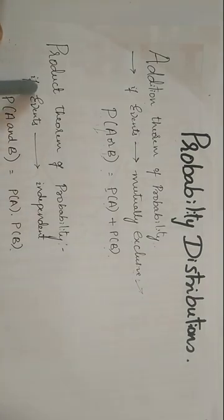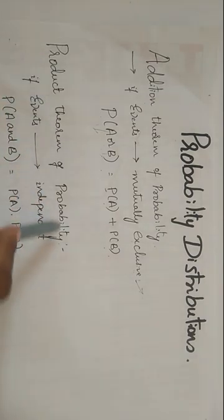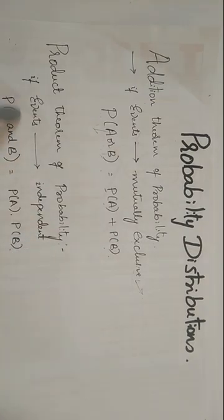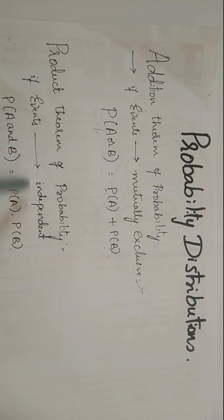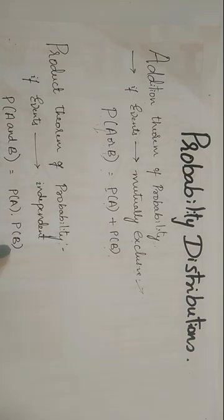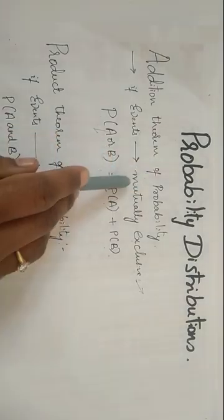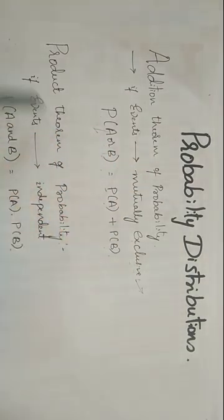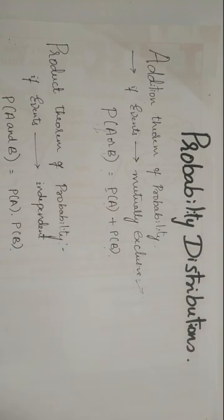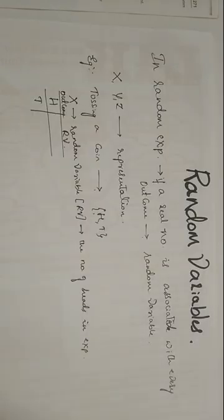Next, the product theorem of probability. The product theorem says: if two or more events are independent, then P of A and B will be equal to P of A into P of B. So the addition theorem is related to mutually exclusive events, and the product theorem is related to independent events.